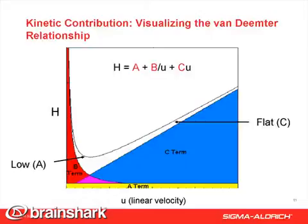When we plot H versus linear velocity, we get the parabolic curve shown here. And this is what we refer to as the Van Deemter relationship. This is a typical sort of pattern we see.